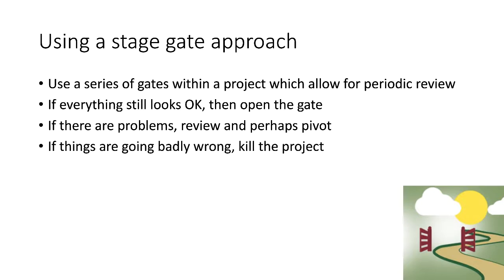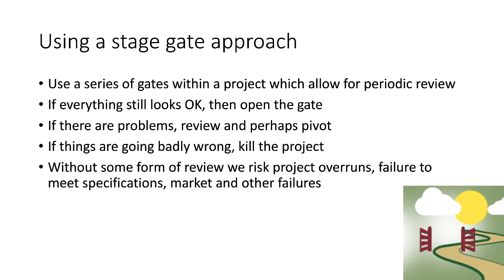But if things are going badly wrong — if the market isn't there when we test it, if the software is proving much more difficult to develop — we have to be prepared at a certain stage to say no and kill the project. That's a very hard decision in innovation, but if we don't, we run the risk of committing further resources with no guarantee we'll have anything at the end of it. The evidence is very clear: without some form of review, we risk project overruns in costs and budget, failure to meet specifications, failure to hit market requirements, and a host of other failures. So there's a real need to take some kind of staged review over time to manage the uncertainty in any innovation project.